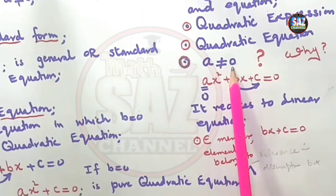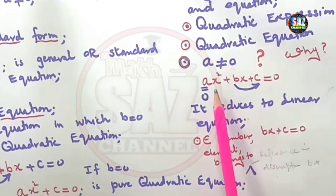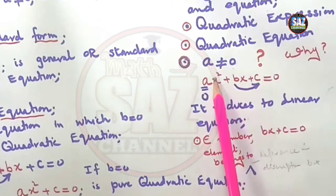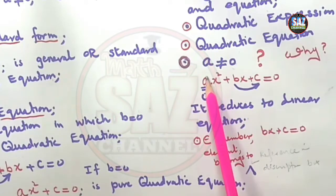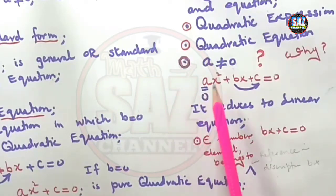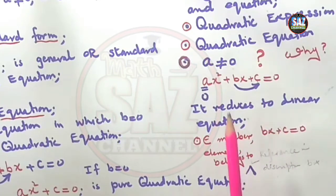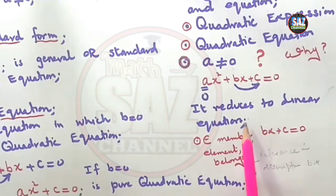Then the question comes: why should this not be equal to 0? Look, if in this equation I'm making this coefficient of the square term 0, this whole term will become 0, and I will be left with bx+c=0. I will not have the square term with me and the equation will reduce to a simple linear equation.